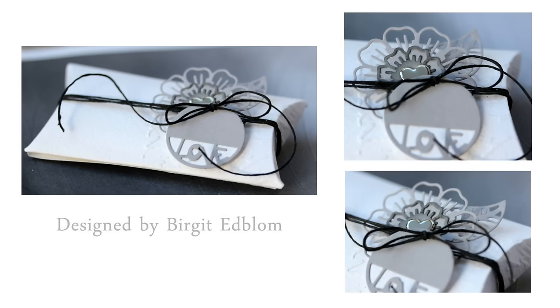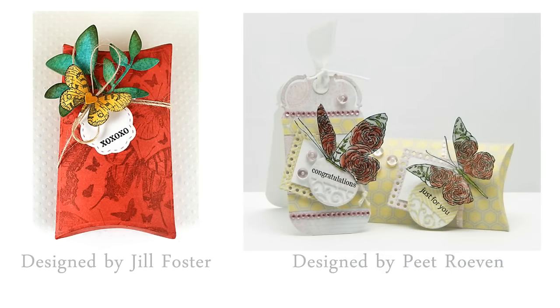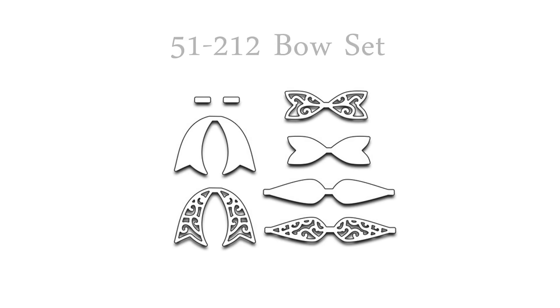Stamp it. Here's an example by Birgit Edbloom. And it's just beautiful. This is one where she used some twine around the ends to keep it closed. And then here's a couple more examples. One by myself. I inked my paper first and stamped it and then die cut it. And then here's another beautiful example from Pete Rovin. And I will link to all of these designers blogs down in the description box if you want to check out more of their beautiful stamping.